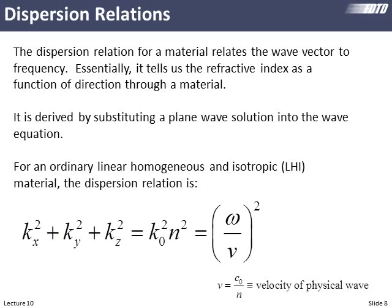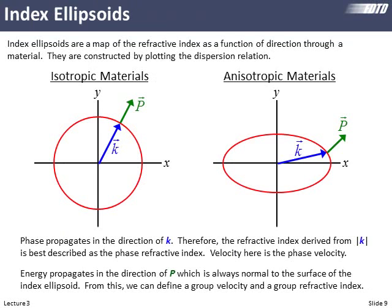We have what's called dispersion relations. A solution to Maxwell's equations is plane waves — substituting that solution back in and turning the algebra crank produces an equation that constrains the values the wave vector can take based on frequency. That's called the dispersion relation. For ordinary materials: kx² + ky² + kz², the magnitude of our wave vector squared, equals (ω/v)². That's our dispersion relation for a physical wave.